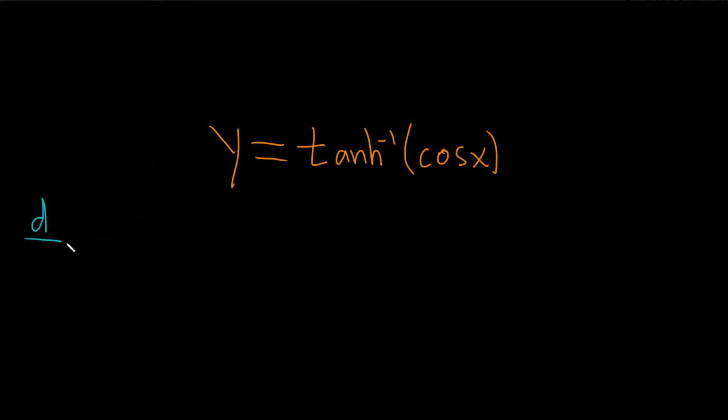So the formula for the derivative of tanh inverse is the following. The hyperbolic tangent inverse of x, take the derivative of that, it's just 1 over 1 minus x squared.